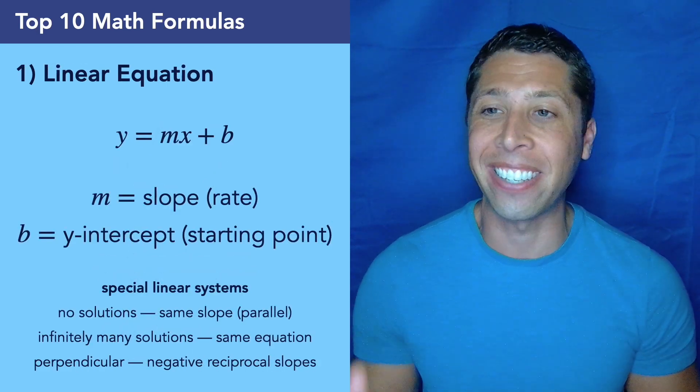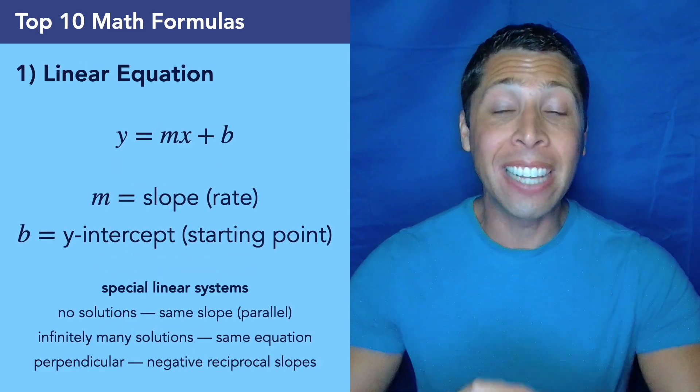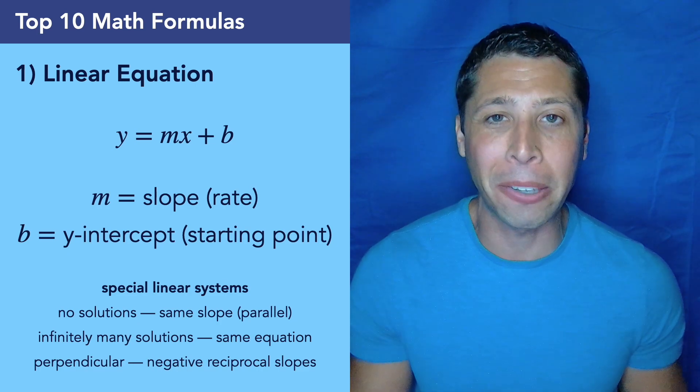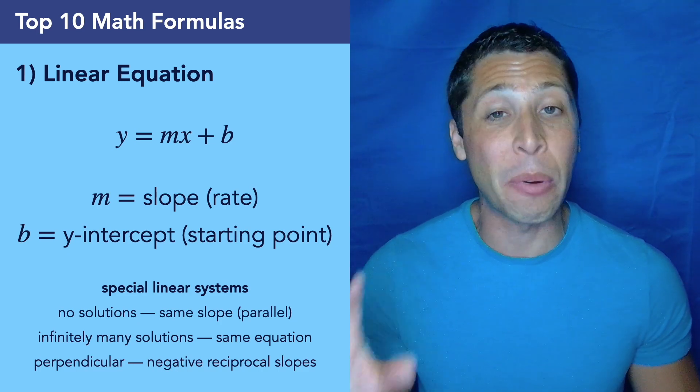And the most important formula on the SAT is y equals mx plus b. It's going to come up on like 25% of the test. You need to be comfortable with it, you need to know all the vocabulary associated with it, it's definitely going to come up and it's going to be worth a lot of points.